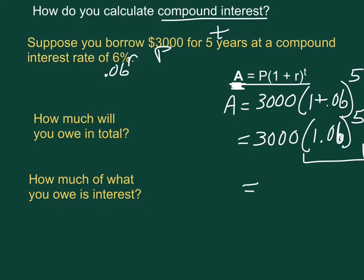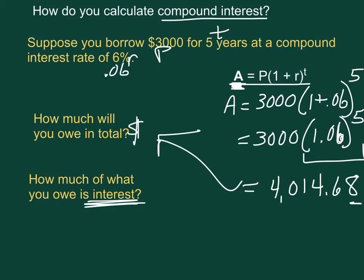So our total is $4,014.68. Be sure and round to the pennies because of course the hundredths place is as small as we get with our money system. So how much will you owe in total? And that would be your $4,014. And how much of it is interest? Well you'll have to subtract here. You'll have to take your 4,014.68 cents and subtract out the 3,000 that you borrowed in the first place. So the interest you'll owe is $1,014.68.